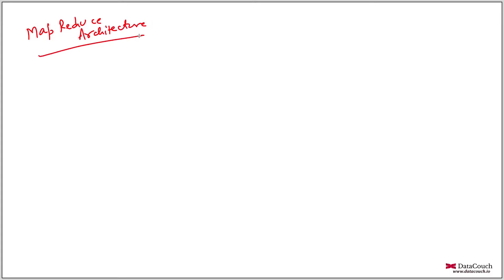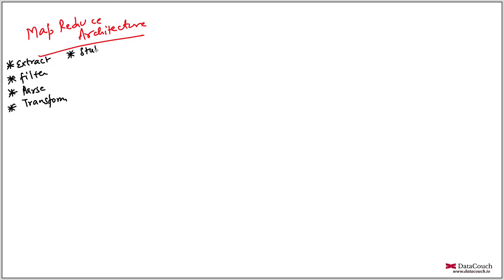Before we go inside the architecture, understand there are some responsibilities of Mapper and some responsibilities of Reducer. Mapper's responsibility is to extract data, filter data, parse data, and transform the data. Reducer's responsibility is to apply statistical functions like aggregations and other things. So these are the high-level responsibilities of Map and Reduce.